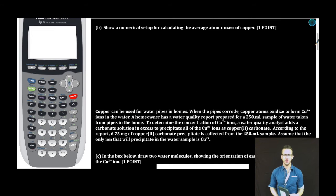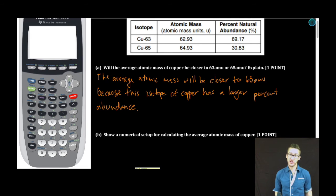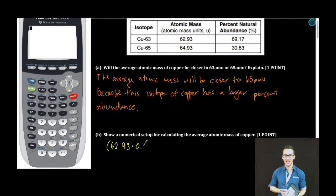Part B: Show a numerical setup for calculating the average atomic mass of copper. So this is not on your formula chart, and it's a pretty good idea to know how to do weighted averages, considering that's how we figure out your grade for this class. So it's just the mass of the first isotope, 62.93, times its percent abundance, which is 0.6917. Don't forget, when working with those percentages, move your decimal two places. Add to that the mass of the second isotope, 64.93, times its percent abundance of 0.3083.